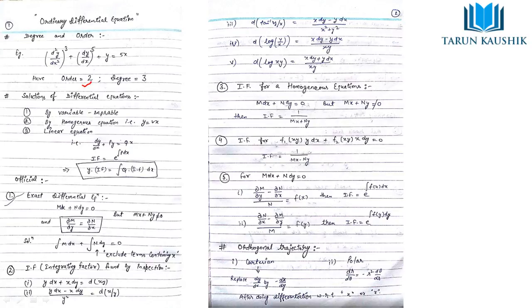The solution of a differential equation can be obtained by various methods: variable separable, homogeneous equation, or by putting it in linear equation form. In the linear form dy/dx + Py = Q, the integrating factor is e raised to the power ∫P dx. The solution becomes y times the integrating factor equals the integral of Q times the integrating factor with respect to x.